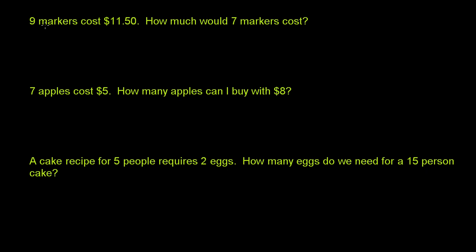In this first problem, we have nine markers cost $11.50. And then they ask us, how much would seven markers cost? Now, let's just set x to be equal to our answer — the cost of seven markers. The way to solve a problem like this is to set up two ratios and then set them equal to each other.